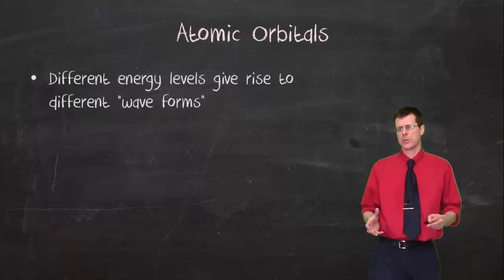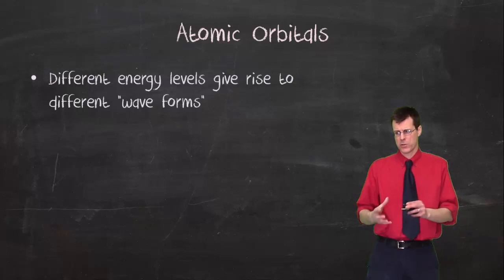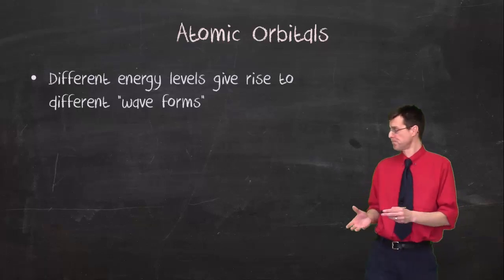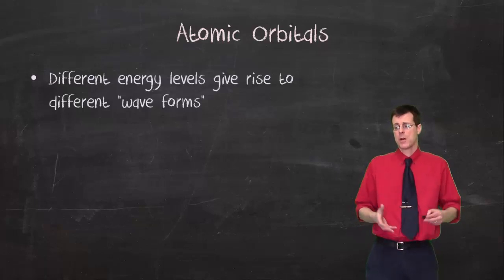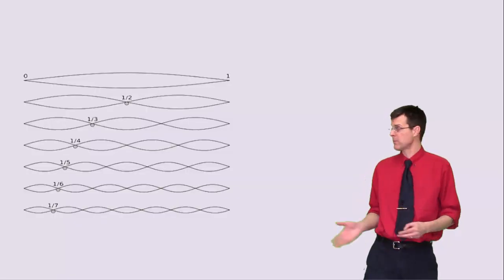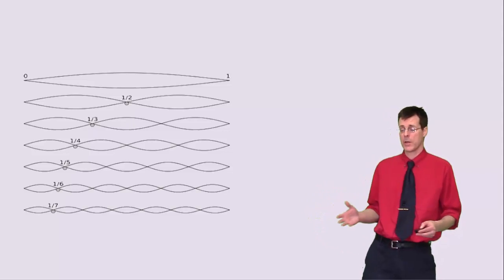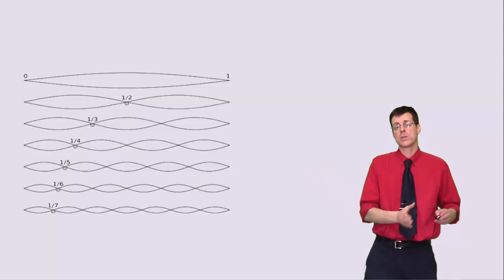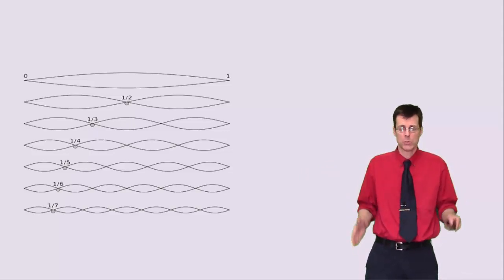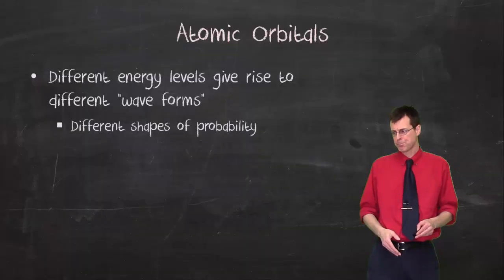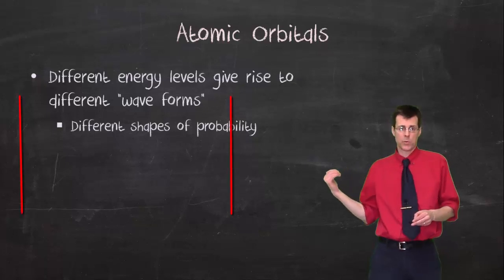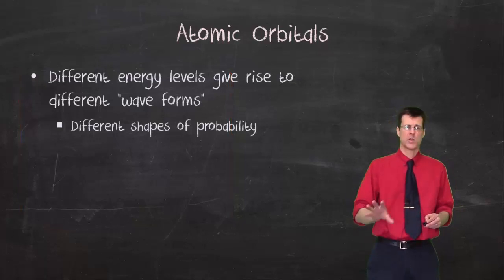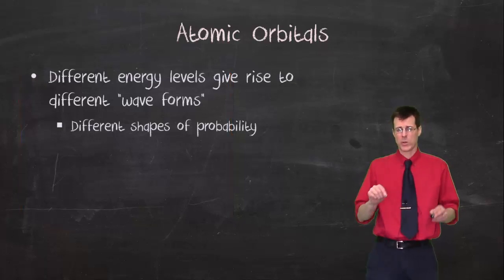We talk about atomic orbitals. So these atoms have orbitals, and the electrons are going to be in orbitals. Well, what's an orbital? Well, it's going to be different kinds of orbitals, different orbitals are going to be from different waveforms. Now, if I look at this picture, if you look at those things, all of those waves, different forms of waves have something in common. They all fit within the same two left and right boundaries. And what that will give to us is different shapes of probability.